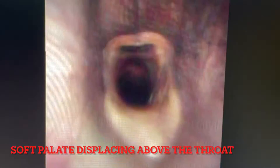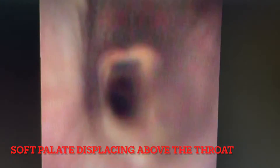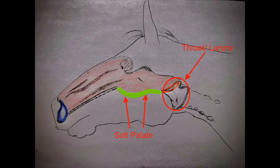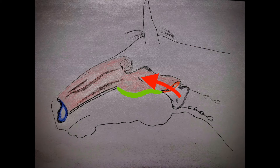The tie-forward is performed for expiratory conditions, most notably intermittent dorsal displacement of the soft palate. What we aim to do is place sutures around the sides through the thyroid cartilage of the throat and tie it forward, anchoring it up to the hyoid apparatus or wishbone between the two lower jaws. This brings the throat forward, increasingly overlapping with the soft palate, making it harder for the soft palate to flip up and obstruct the airway. So the tie-forward is used for expiratory conditions.